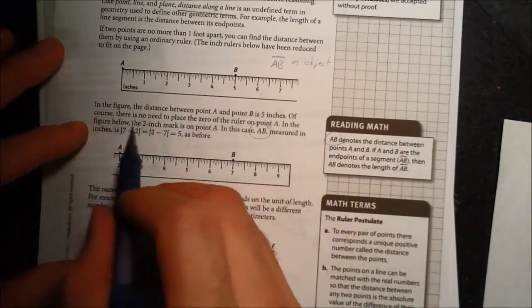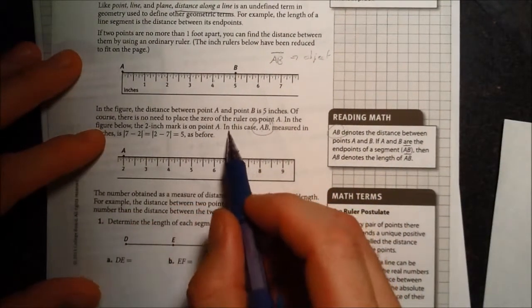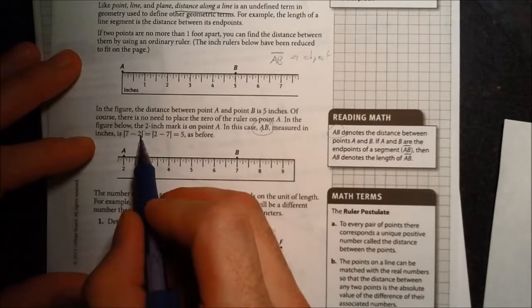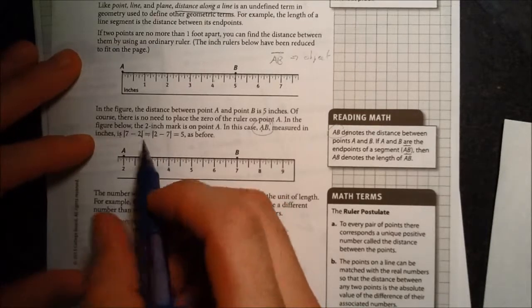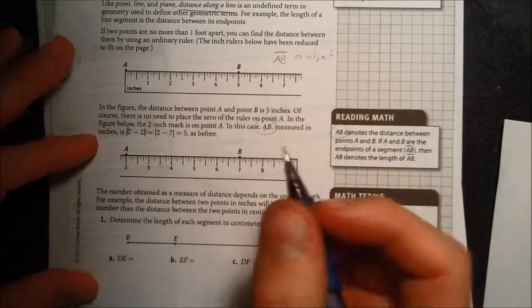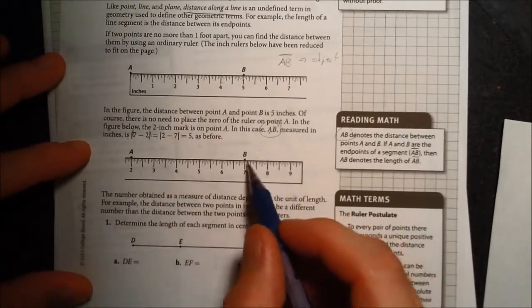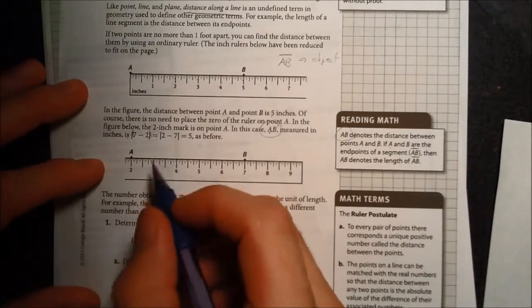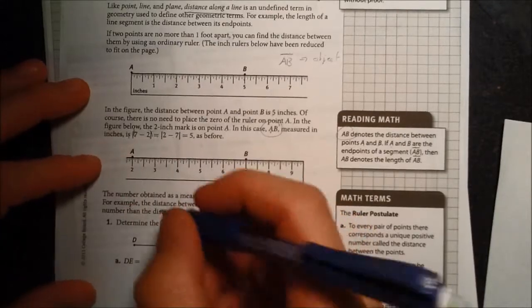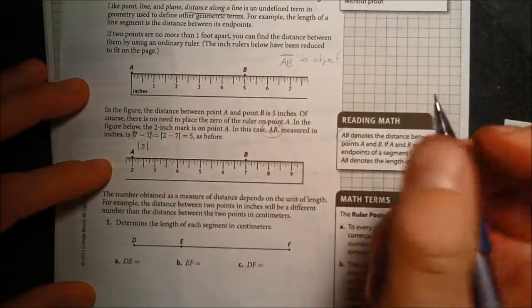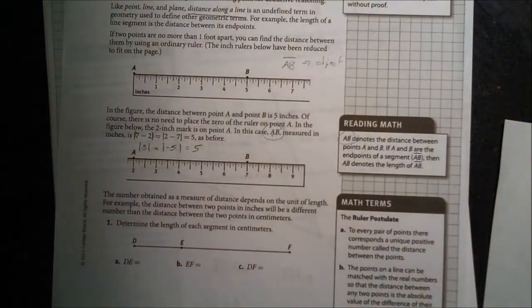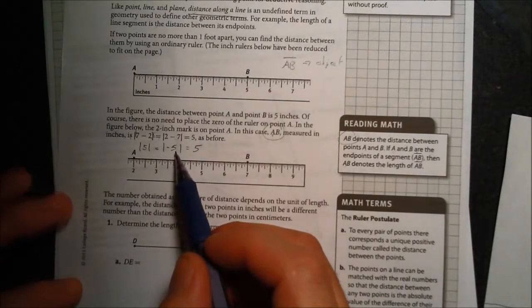So back to this. It says that in the figure below, the 2 inch mark is on point A. In this case, the length of segment AB measured in inches is 7 minus 2, which is the exact same thing as 2 minus 7. You're taking the absolute value of the difference of the coordinates. So if A is at 2 and the other endpoint, in this case B, is at 7, you take the difference. It doesn't matter what order you take the difference in. And once you've taken the difference, you take the absolute value of that. So 7 minus 2, that's the absolute value of 5. That's the same thing as the absolute value of negative 5. That is simply 5. Remember, absolute value is the distance from 0. So the absolute value of positive 5 is the same thing as the absolute value of negative 5.